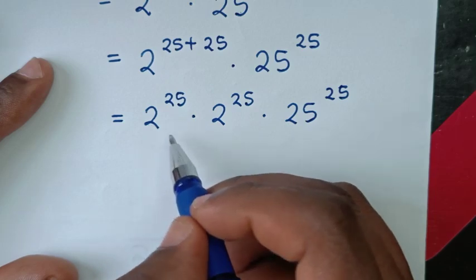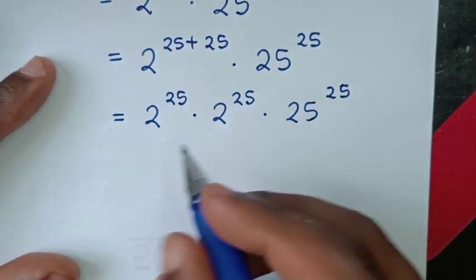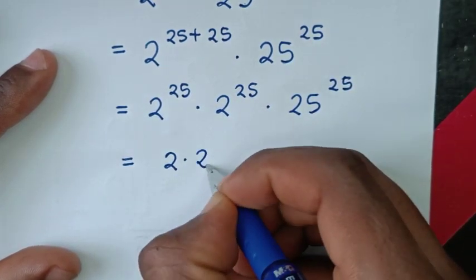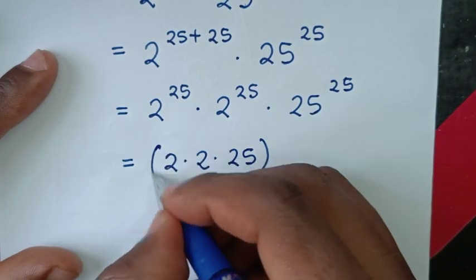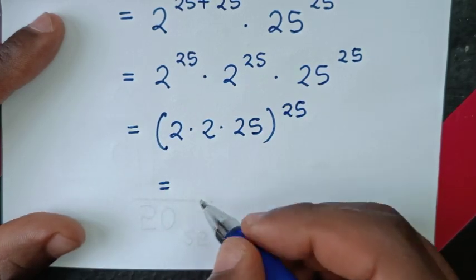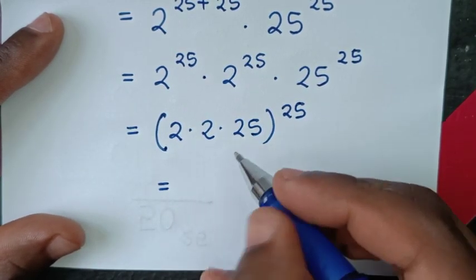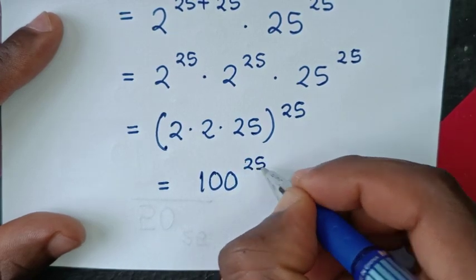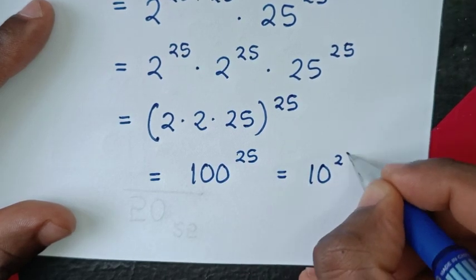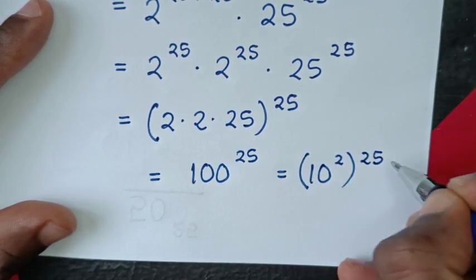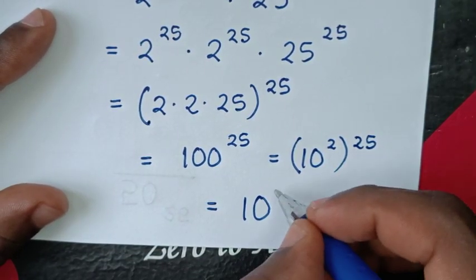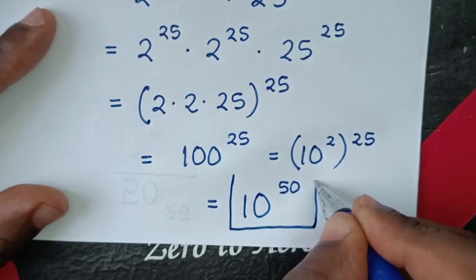We now have different bases but the same power of 25, so we multiply all the bases: 2 times 2 times 25, bracket to the power of 25. That gives 4 times 25 equals 100, so 100 power of 25. Then 100 is the same as 10 squared, so 10 squared to the power of 25 equals 10 power of 50, which is our final answer.